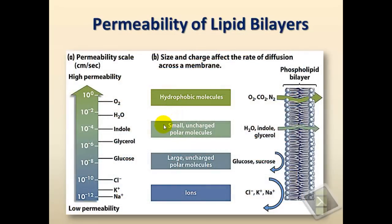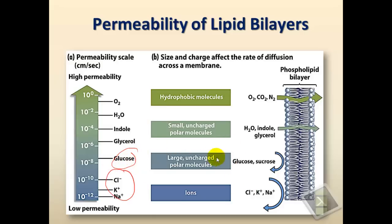The composition of biological molecules affects the permeability and fluidity of membranes. Measuring permeability on a scale from low to high: ions and charged particles have very low permeability — they cannot cross the membrane because they would interact with the hydrophilic heads of phospholipids. Large polar molecules also have difficulty crossing without the help of transporter proteins, making the membrane impermeable to them. Small polar molecules can cross but with low permeability.